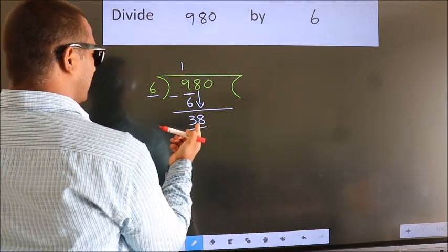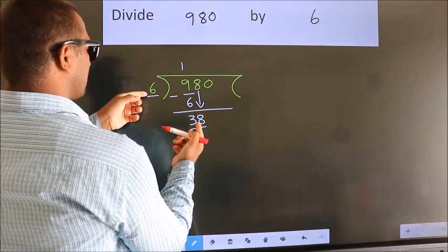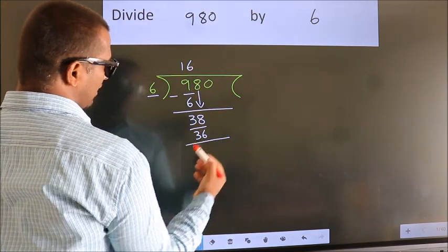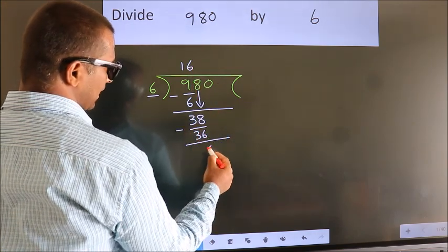A number close to 38 in the 6 table is 6 times 6, which is 36. Now, we subtract. We get 2.